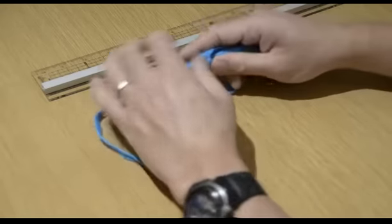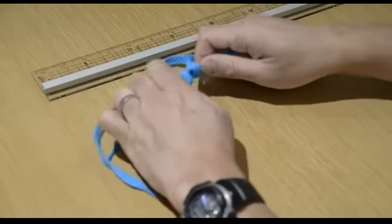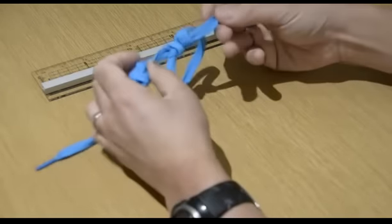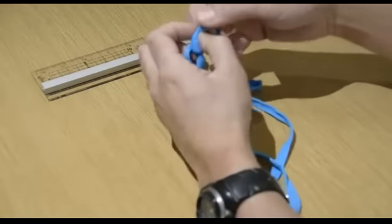Now just pull these two knots into the center, and here you have your necktie finger sling.